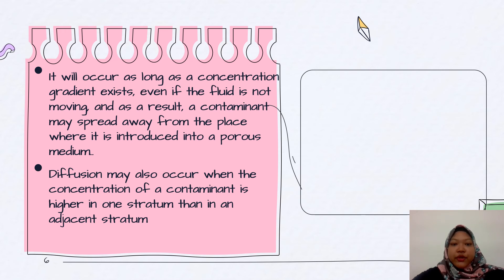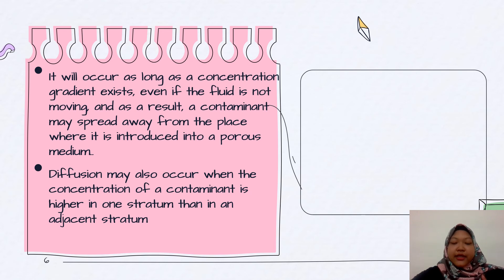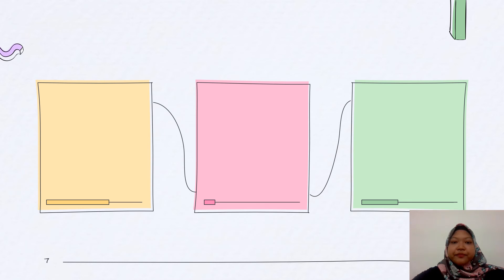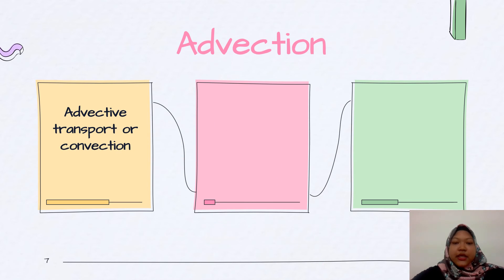Diffusion may also occur when the concentration of a contaminant is higher in one stream than in adjacent streams. The next one is advection.